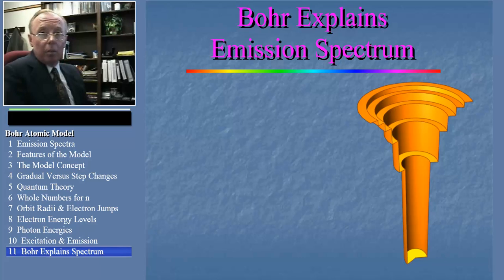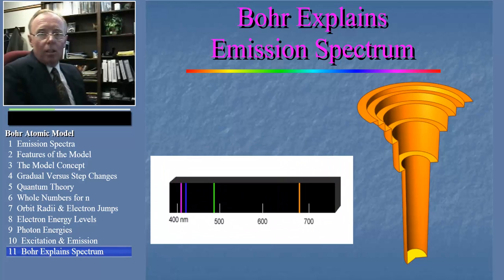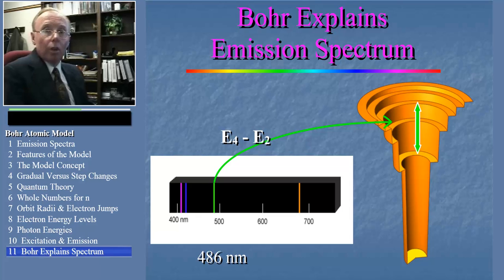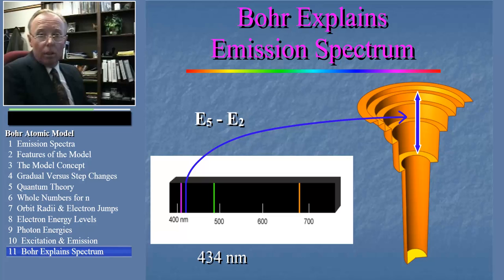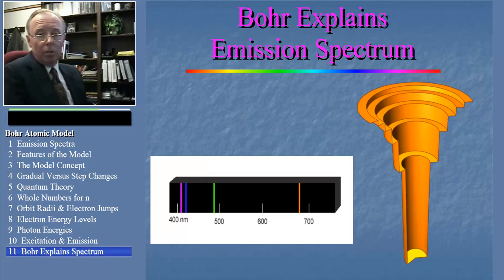It turns out the first line in the spectrum represents an electron jumping down from n equals 3 to n equals 2. The second represents an electron jumping down from n equals 4 to n equals 2. The third from n equals 5 to n equals 2. And the fourth from n equals 6 to n equals 2.